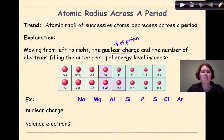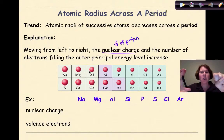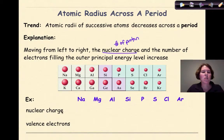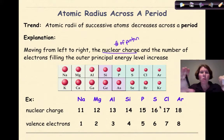Sodium has an atomic number of 11, magnesium 12, and aluminum 13. As you go across, the number of protons increases, making the nucleus more positive, while the number of electrons in the outermost shell also increases, making that shell more negative. Since the nucleus becomes more positive and the outermost shell more negative, they attract each other and the atomic radius gets smaller. For example: sodium has nuclear charge 11 with 1 valence electron; magnesium is 12 with 2; aluminum is 13 with 3 — and so on across the period.